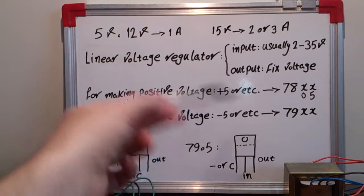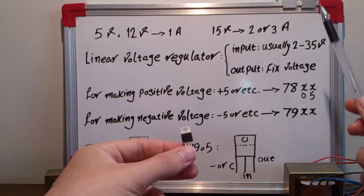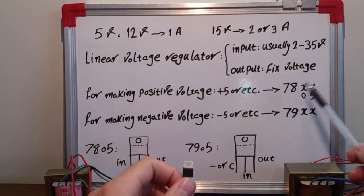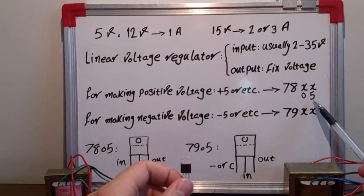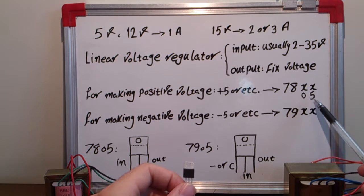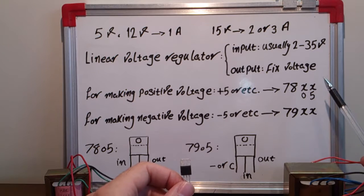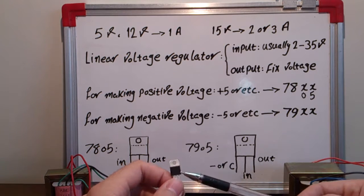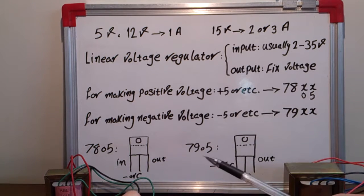So for making a positive voltage like positive 5 volts, we need to use a kind of regulator that has a part number starting with 78XX. The XX means that it can be changed by number, and these two digits at the end make the output voltage. Like, 7805 regulator—the output of this regulator is positive 5 volts.